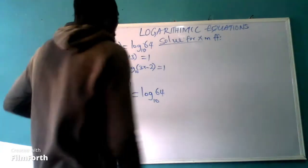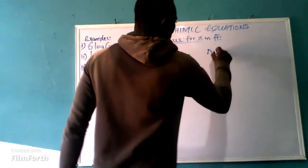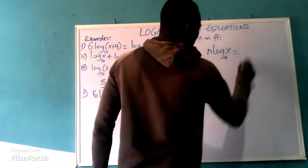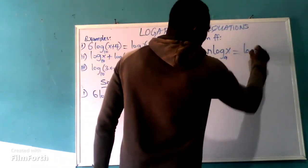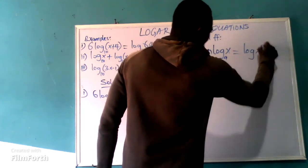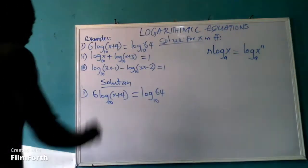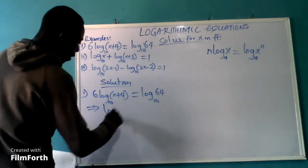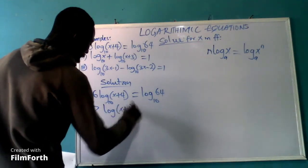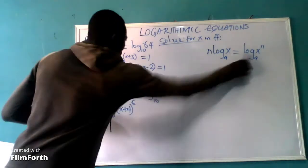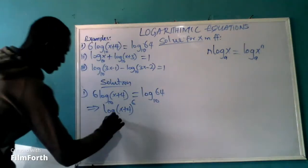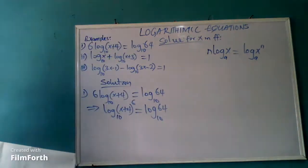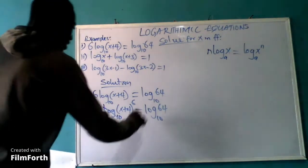There is a particular law of logarithms that says if you have a value multiplying log of x — take for instance, into base a — it can still be written as log of x raised to that value, into base a. So here, 6 log(x + 4) into base 10 can still be written as log of (x + 4) raised to the power 6, into base 10, equal to log 64 into base 10.